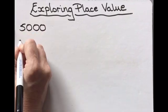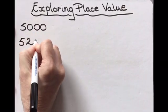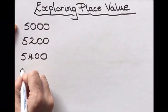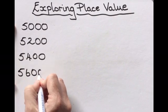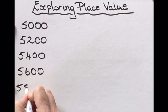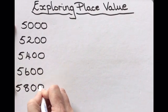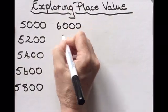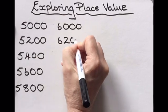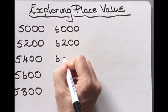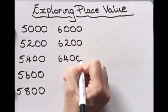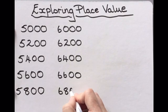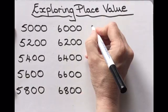This next choral count was done with the Primary 4 class and it explores place value. One of my objectives was for my learners to see that there are 5 lots of 200 in 1000, so I recorded the count vertically to encourage them to see this pattern.